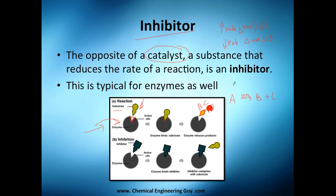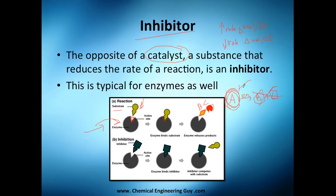But what if you don't want that? Let's say you actually want to produce A, and you have these enzymes which you cannot remove. Instead of keeping A, you're producing B and C — you don't want that. You want to stay with A. So what do you do if you cannot take out the enzyme? You inhibit it.